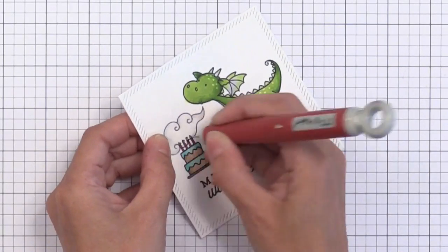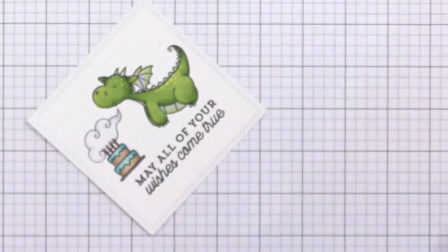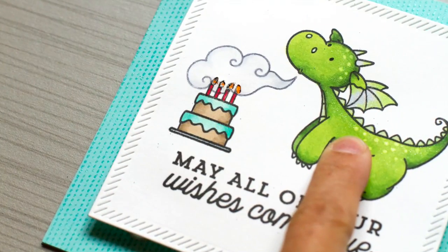After I have everything colored, I'm using my piercer to pierce out each of the little flames on the candle so you can see through that now. They're tiny holes, but it will work for what we're doing.